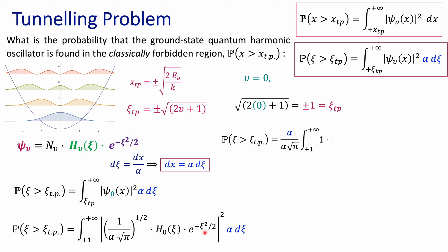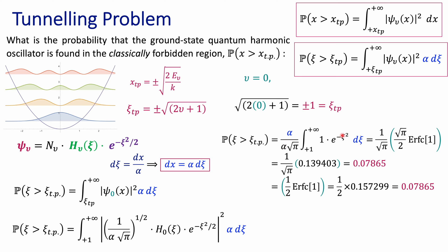After doing the proper substitutions and pulling the normalization constant outside the integration, I'm left with the integral from one to infinity of the Gaussian function. When I integrate this, I find it is defined in terms of the error function — it equals the square root of pi over two times the error function evaluated at one. The alpha from the integration and the alpha from the normalization constant cancel each other. This value is about 0.14, and multiplied by one over the square root of pi it gives about 0.078. Equivalently, this simplifies to one-half of the error function of one; the error function of one is about 0.15, divided by two gives the same result of approximately 0.078.